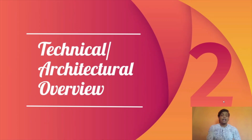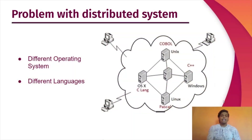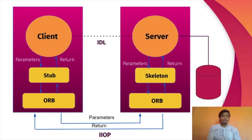The next subtopic is the technical and architectural overview of CORBA. We will see how CORBA works and what elements it consists of. First, let's consider the main problems with distributed systems. A distributed system consists of different machines having different operating systems and code written in different languages. For communication between them, there are mainly two problems: different operating systems and different programming languages. To overcome these problems, we use CORBA architecture, because it provides both language independency and platform independency.